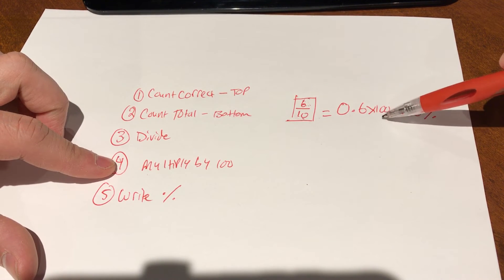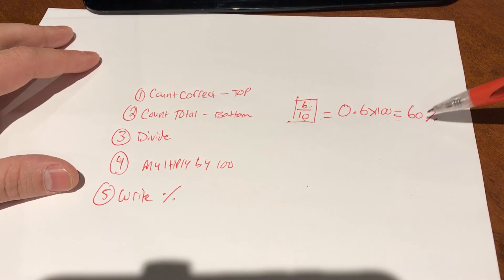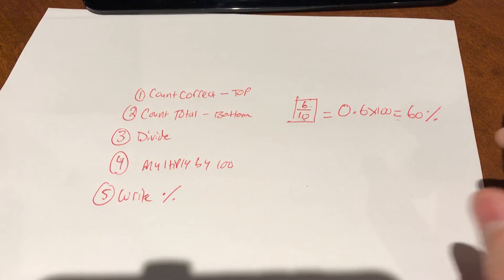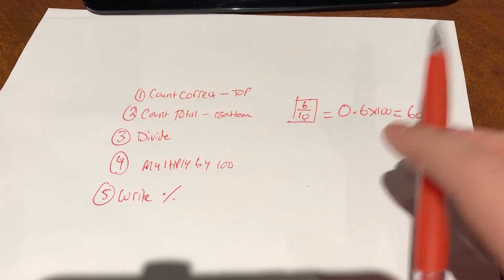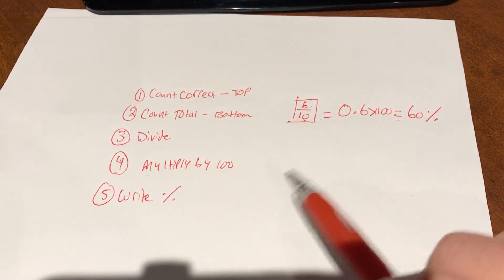Step number four is multiply by 100. And step number five is write the percentage beside the answer. That is how to calculate a test grade. It is a simple five-step process, and I've shown you exactly how to do it in this video.